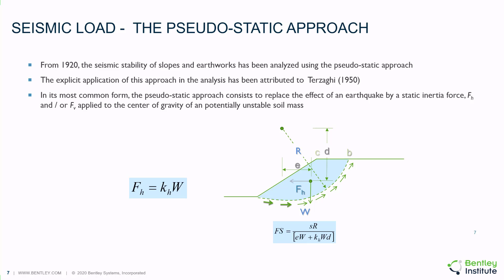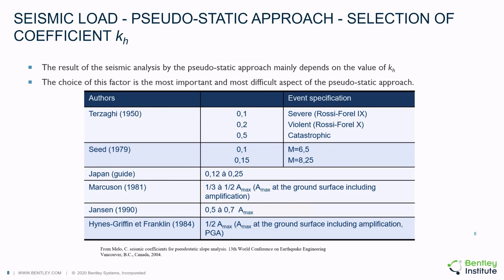It is often of importance to consider earthquake loads in the analysis of the stability of slopes. The common method for considering seismic stability of slopes is the pseudostatic approach, which originated in about 1920. The application of this approach in slope stability has been attributed to Terzaghi in 1950. In the most common form, the pseudostatic approach replaces the effect of an earthquake by a static inertia force, which could potentially be applied horizontally and/or vertically to the center of gravity of a potentially unstable soil mass. The vertical component is often ignored as the horizontal component is the most critical. The pseudostatic approach depends primarily on the value of K sub H, and a number of researchers have suggested appropriate values between 0.1 and up to 0.5, with 0.5 representing a catastrophic event and values between 0.1 to 0.2 representing a severe to violent event.